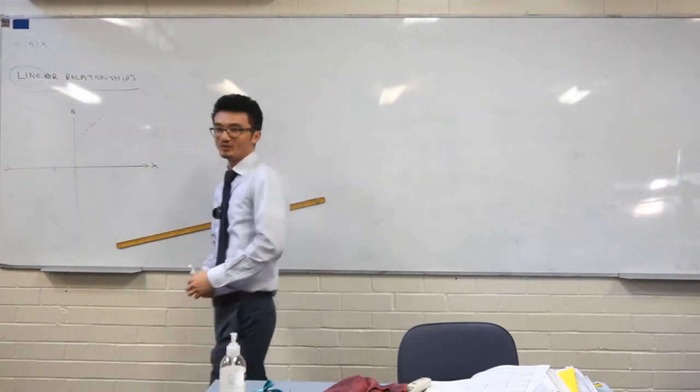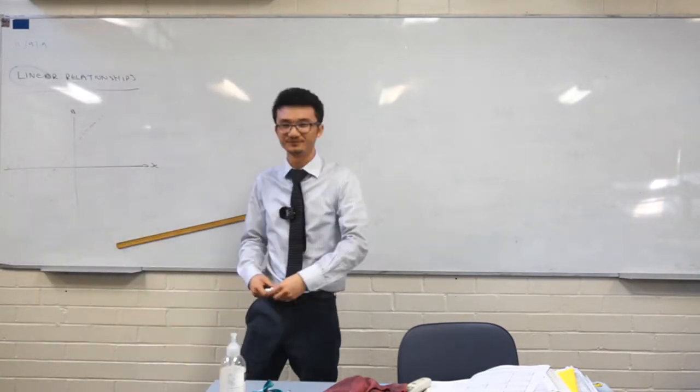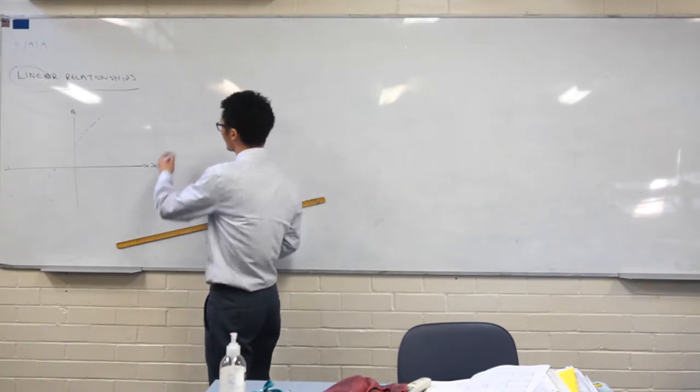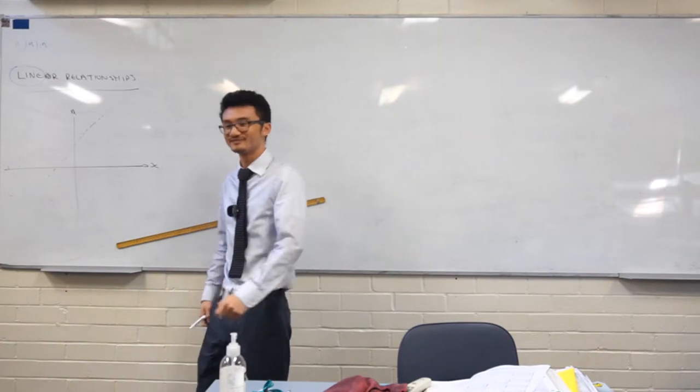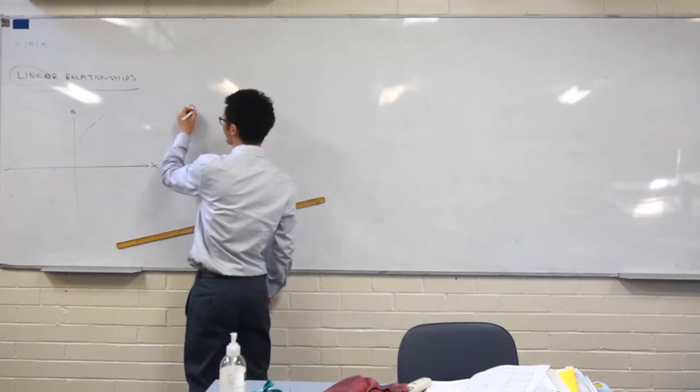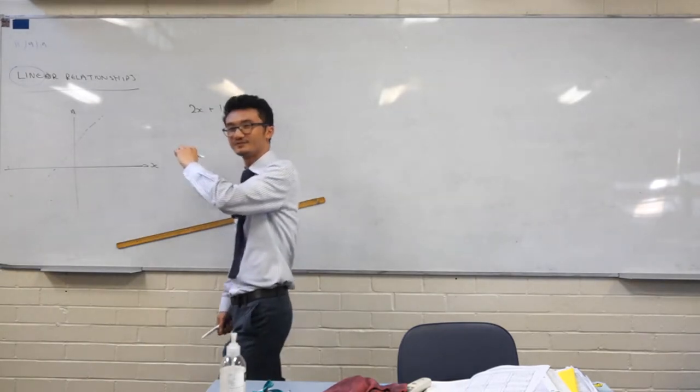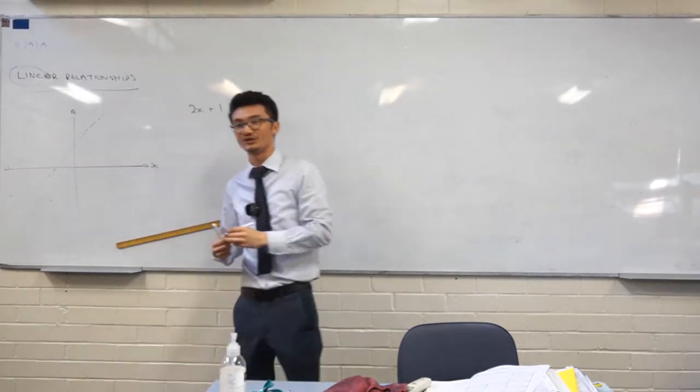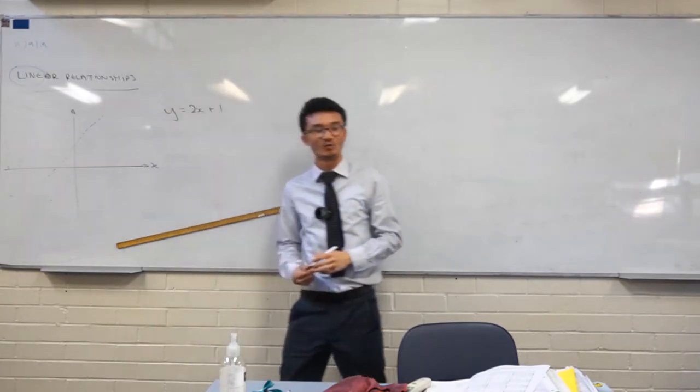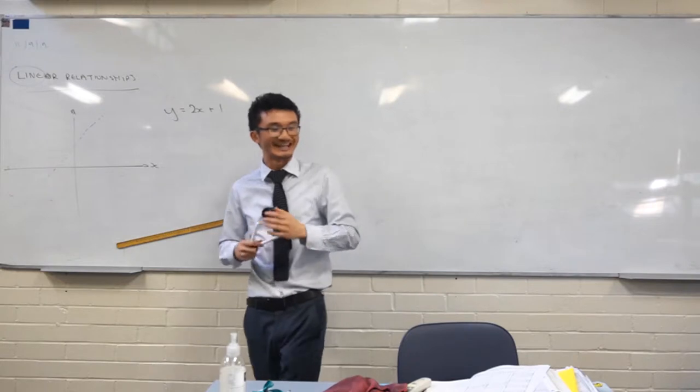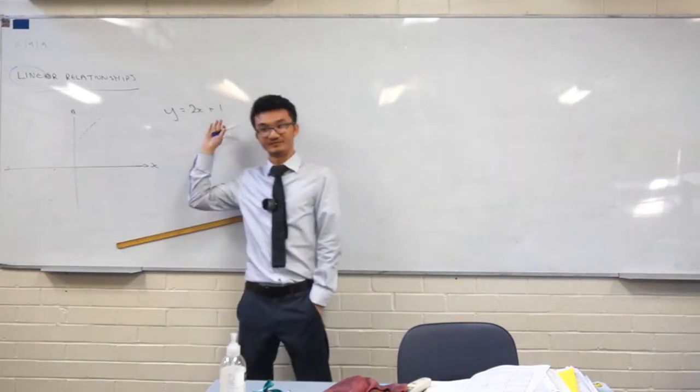When I gave you that equation, what was the matchstick equation? Can someone chat it out for me? What is that matchstick equation that we got? What was the rule that we found? Yeah, Koda? 2 times x plus 1. I said that we can call this y. Let's say y is the number of matchsticks we need, x is the number of triangles we have. This is what we call a linear relationship.